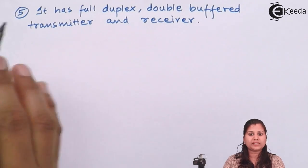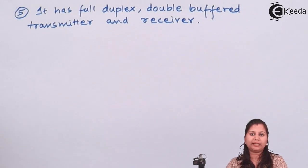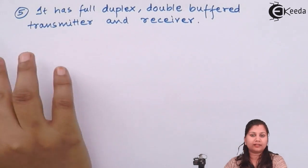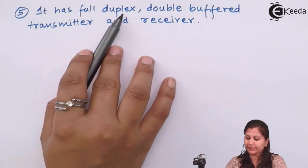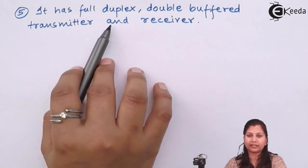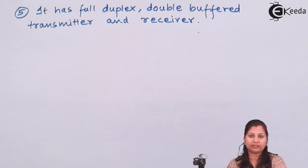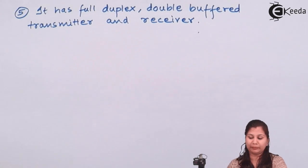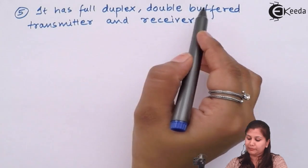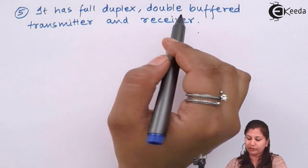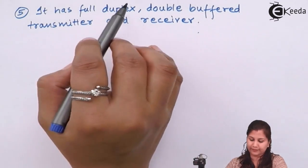In serial transmission, communication can be half duplex or full duplex. The 8251 is a full duplex, double-buffered transmitter and receiver — it acts as both transmitter and receiver simultaneously. It has a bidirectional buffer, meaning it operates in both directions, so it has a double-buffered transmitter and receiver which is full duplex.